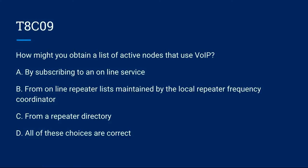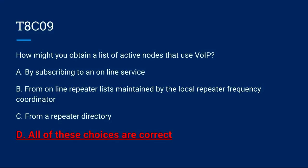T8C09: How might you obtain a list of active nodes that use VoIP? A. By subscribing to an online service. B. From online repeater lists maintained by a local repeater frequency coordinator. C. From a repeater directory. Or D. All of these choices are correct. The correct answer is D: all of these choices are correct.